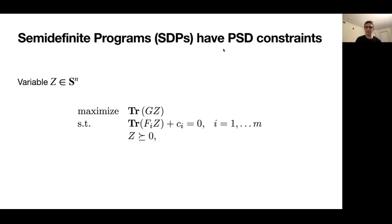First, the semidefinite program, or SDP, is an optimization problem with positive semidefinite matrix constraints. So we have some optimization variable Z, which is a symmetric matrix, and we want to maximize a linear function of that matrix subject to linear equality constraints and a positive semidefinite matrix constraint.